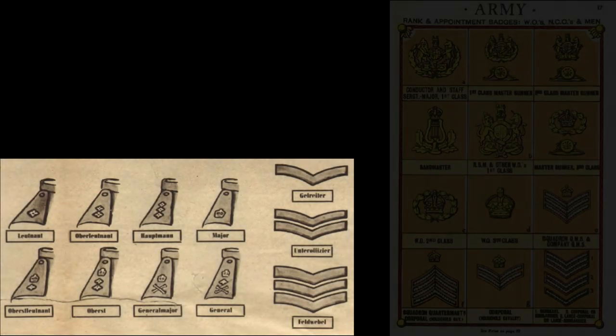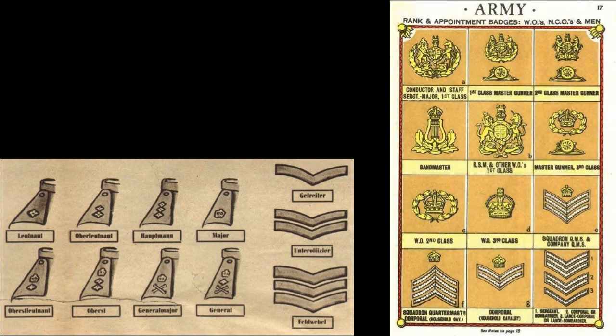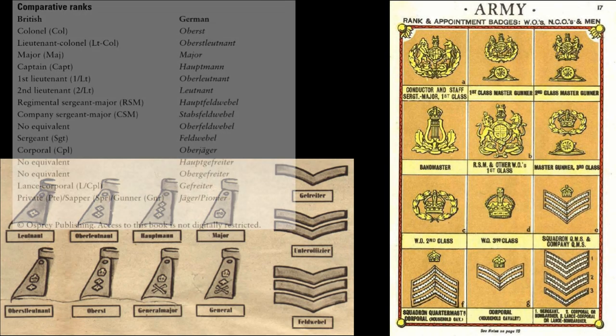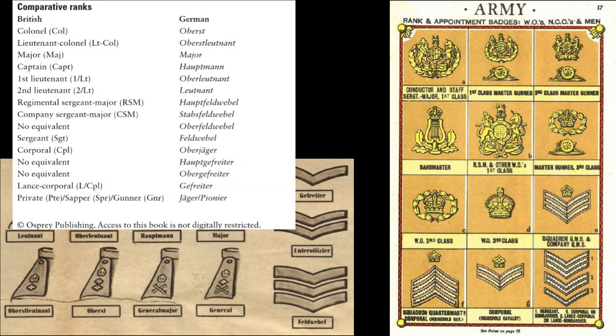The Canadian Army had a basic rank structure similar to other combatants, but there were enough unique characteristics to render the tables of equivalent ranks and many references inaccurate. This video will attempt to provide some clarity.